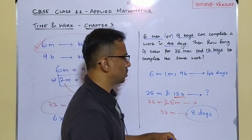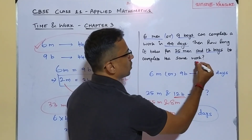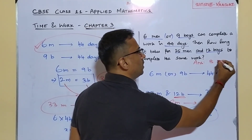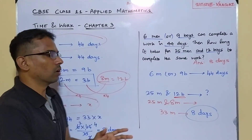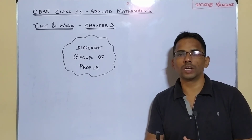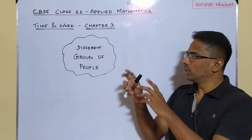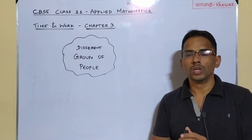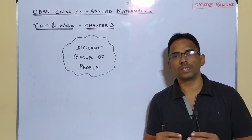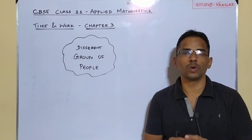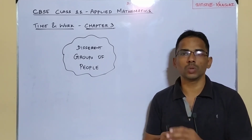So the answer to this question is eight days. To summarize: we used the given information to derive that two men equals three boys, substituted 12 boys as eight men, combined with 25 men to get 33 men, and applied the manpower-time relation to get eight days as the final answer. I hope the concept is clear. If you have any doubts, please push them into the comments. In the next session, we'll cover another concept from Time and Work. Thank you so much.